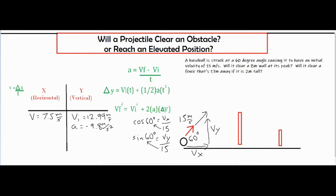For all kinematic formulas that have acceleration, you need at least three variables. We already have two, so we need to decide on a third to solve for what we need. For Part 1 — will it clear the 8 meter wall at its peak — we don't plug in 8 meters directly; it's just used to compare against our delta y result. At the peak, we know something specific: the vertical velocity is zero.